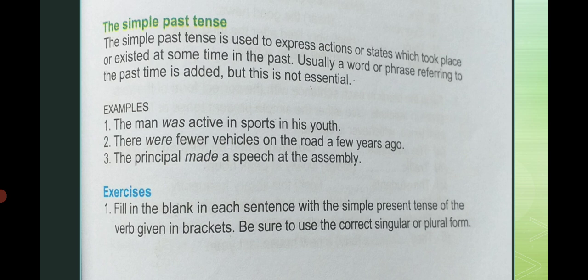Examples of simple past tense: 'The man was active in sports in his youth.' 'There were fewer vehicles on the road a few years ago.' 'The principal made a speech at the assembly.' آپ دیکھیں — was اور were italic form میں لکھے گئے ہیں۔ Was and were کا استعمال تب کیا جاتا ہے جب ہم اپنے past actions کے بارے میں بات کریں۔ Third sentence میں made — جب past tense بنانا ہو تو second form of verb استعمال کریں گے۔